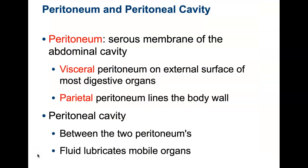Now we get to talk about the peritoneum. We've covered visceral and parietal serous membranes many times already — with the heart as visceral and parietal pericardium, with the lungs as visceral and parietal pleura. Now we have to talk about the peritoneum and the peritoneal cavity. The visceral peritoneum touches the digestive organs, and the parietal peritoneum lines the abdominal cavity wall.